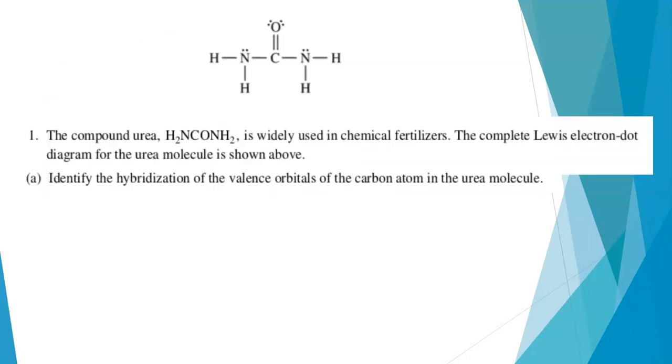Okay, so let's jump right into the problem. The compound urea, we're given the formula, is widely used in chemical fertilizers, and we're also given a Lewis structure. Part A asks, what's the hybridization of the carbon atom in the urea molecule? This question was scored out of one point, and there's only one carbon atom, so there's no ambiguity.